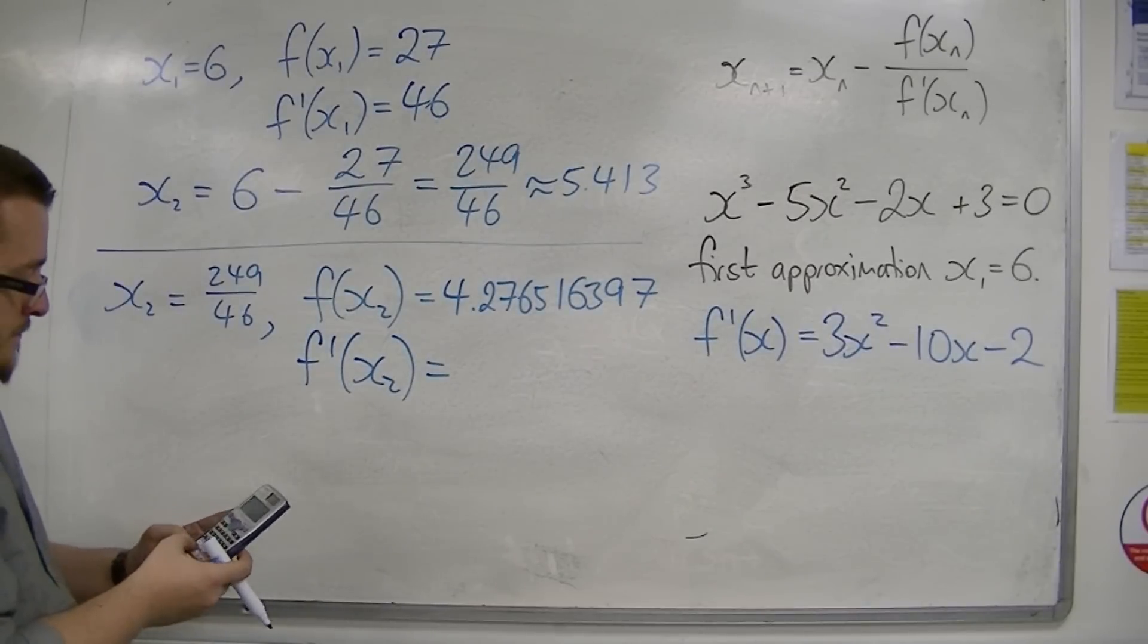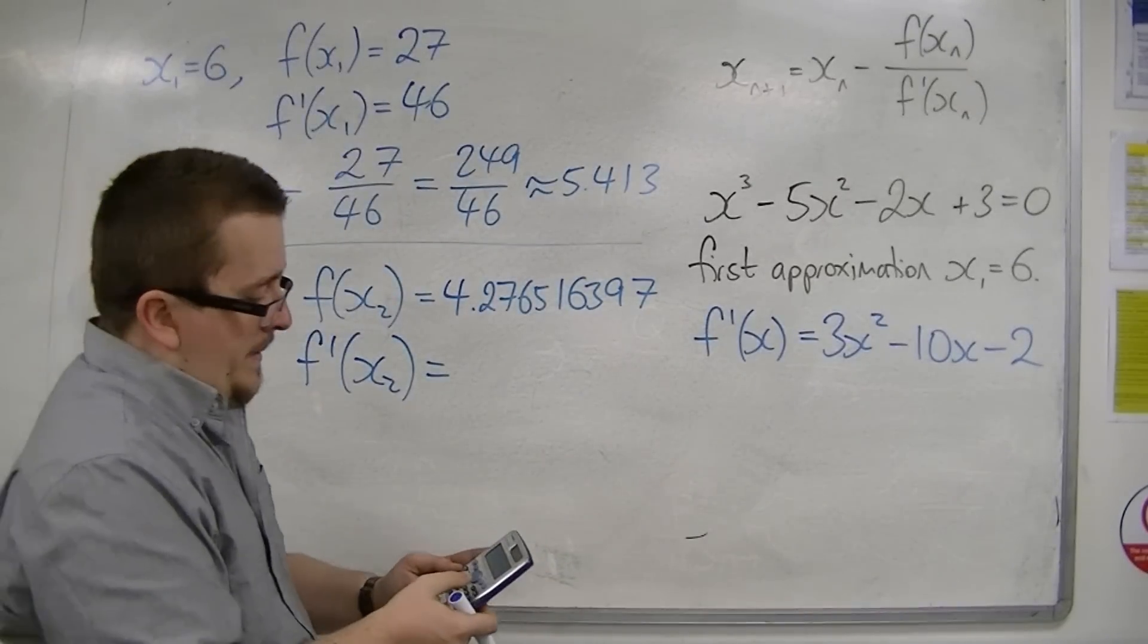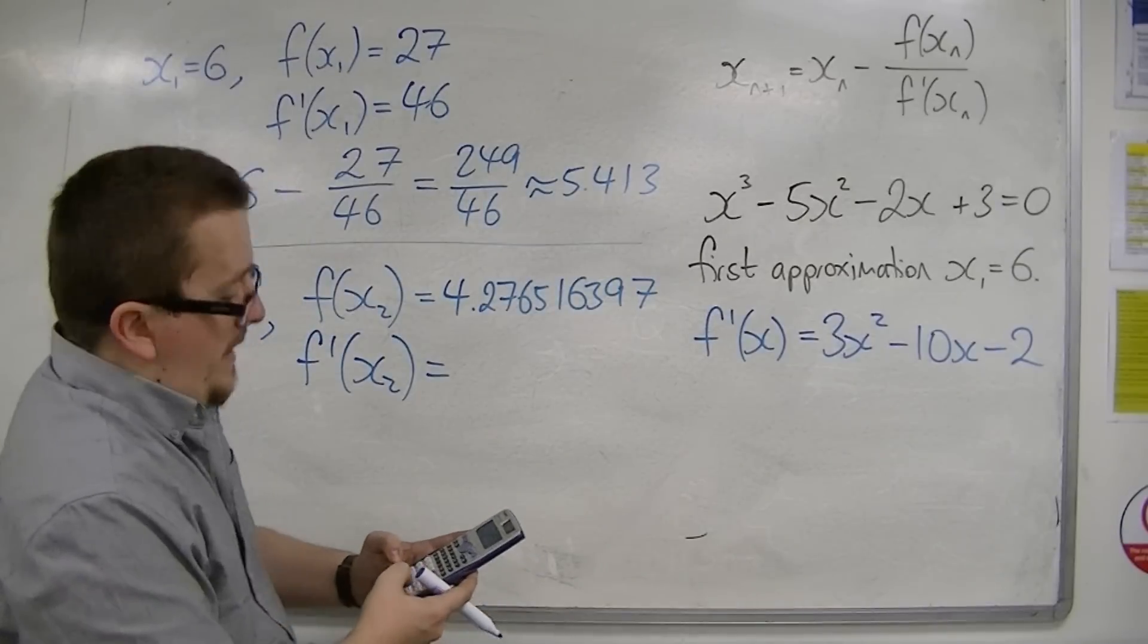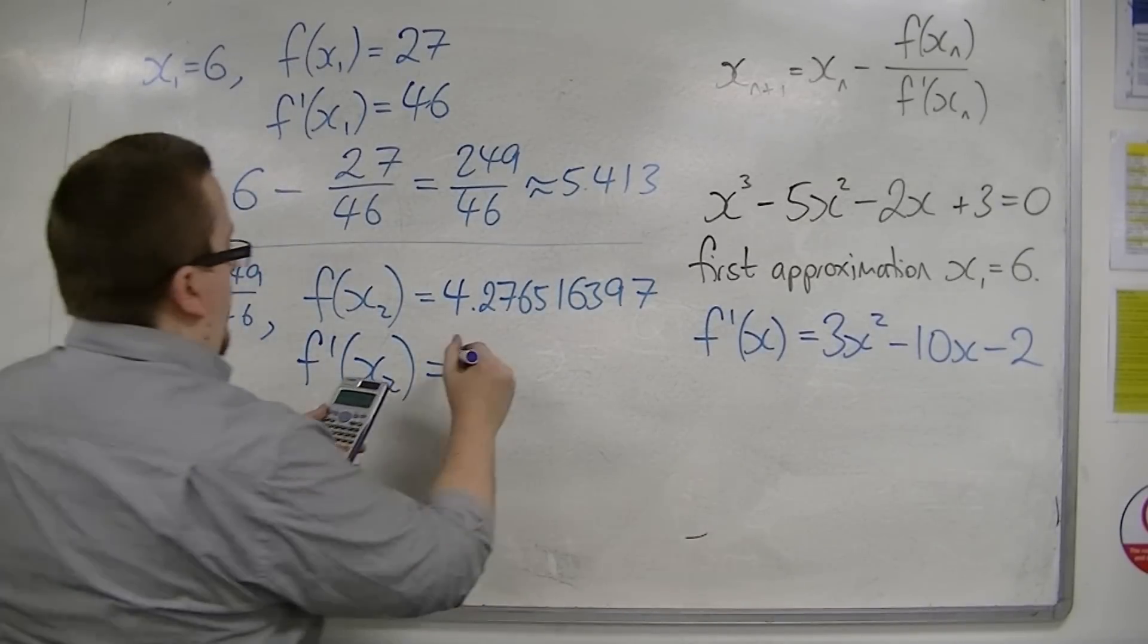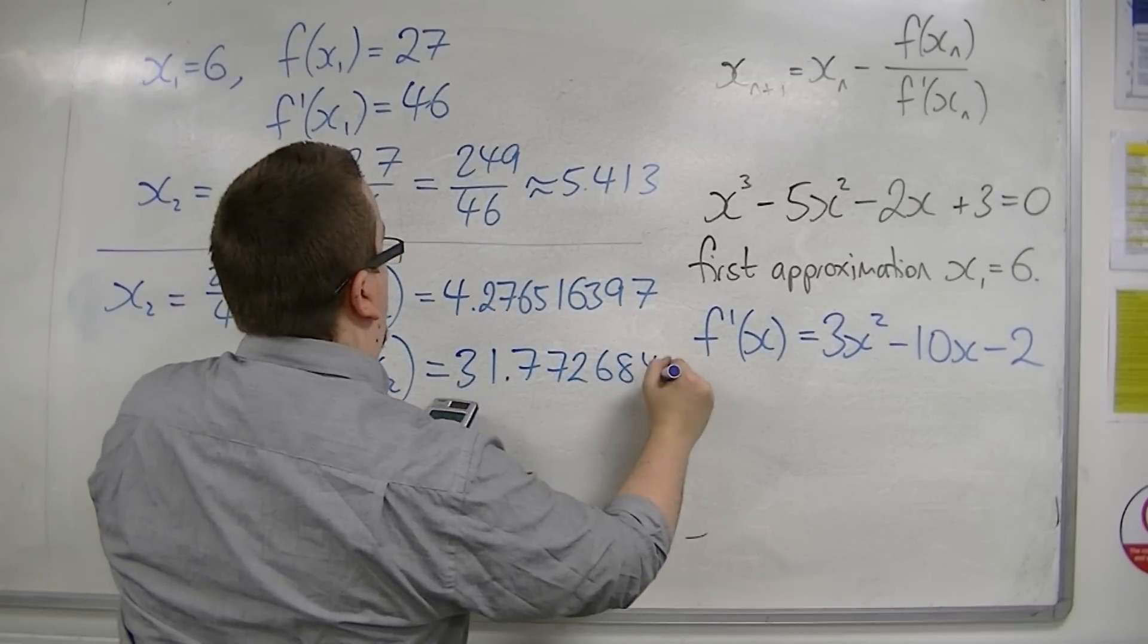So substituting into f prime, we're going to have 3 times the answer squared, take away 10 times the answer, take away 2. So we get 31.77268431.